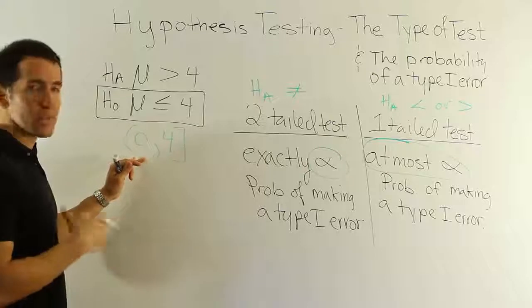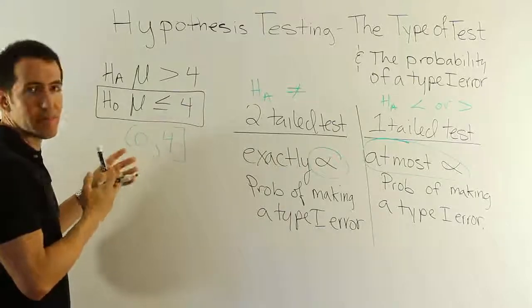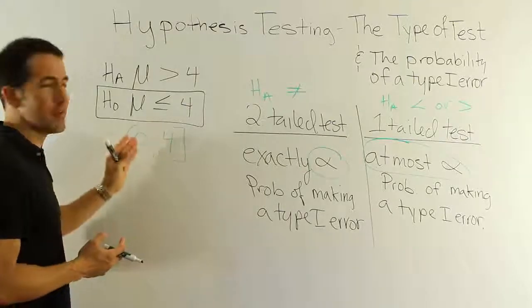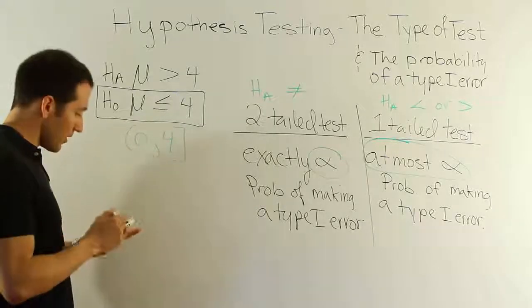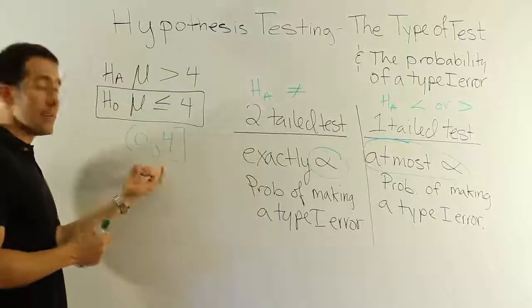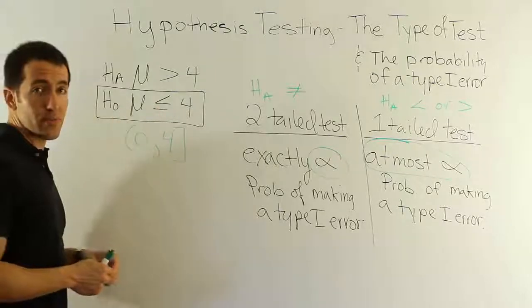We're stopping at 0 because this problem was about completing a bachelor's degree and you couldn't finish before 0 years. So otherwise, you could go down to negative infinity up to 4. But either way, the point is that we have this set of values. If the mean is any one of these values, H0 is true.